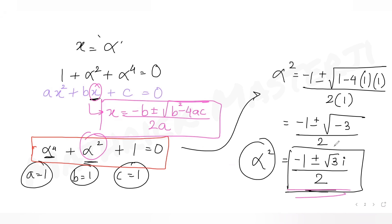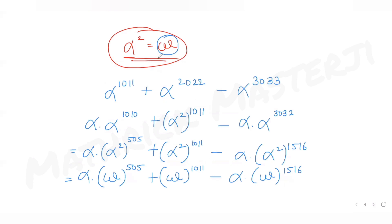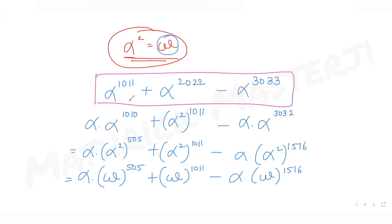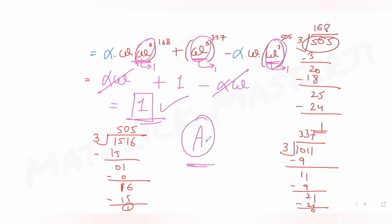To summarize: we used the quadratic formula to find that α² equals omega, the complex cube root of unity. Then in the expression, we converted powers of alpha into powers of alpha² (= ω), and simplified each omega power using ω³ = 1. The alpha terms cancelled, and the final answer is 1, option A.